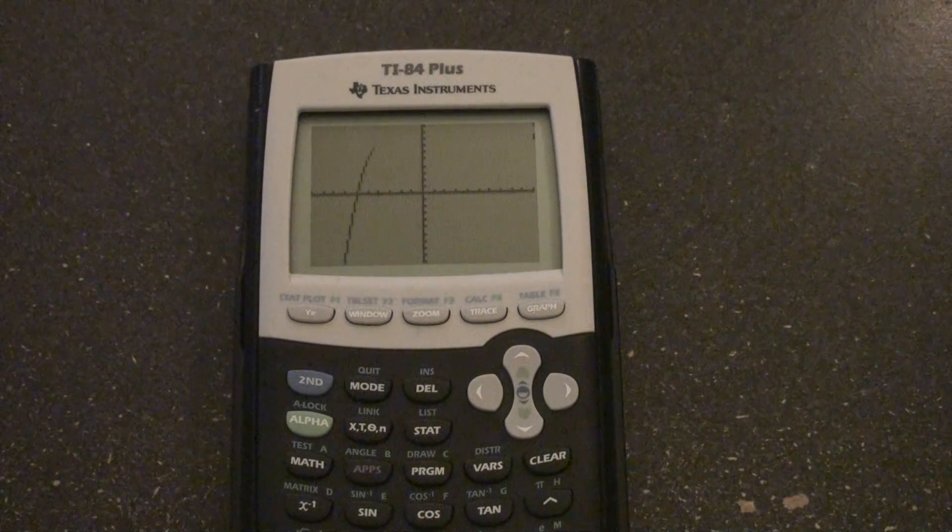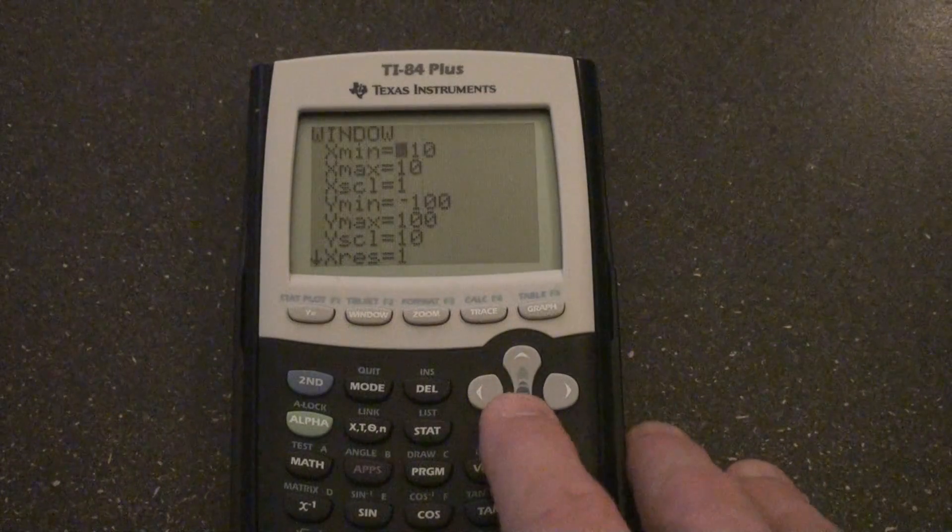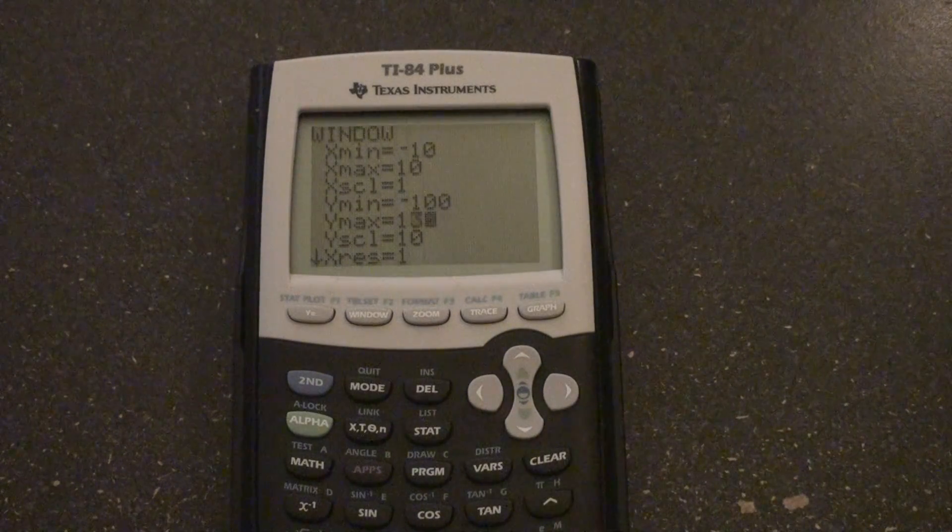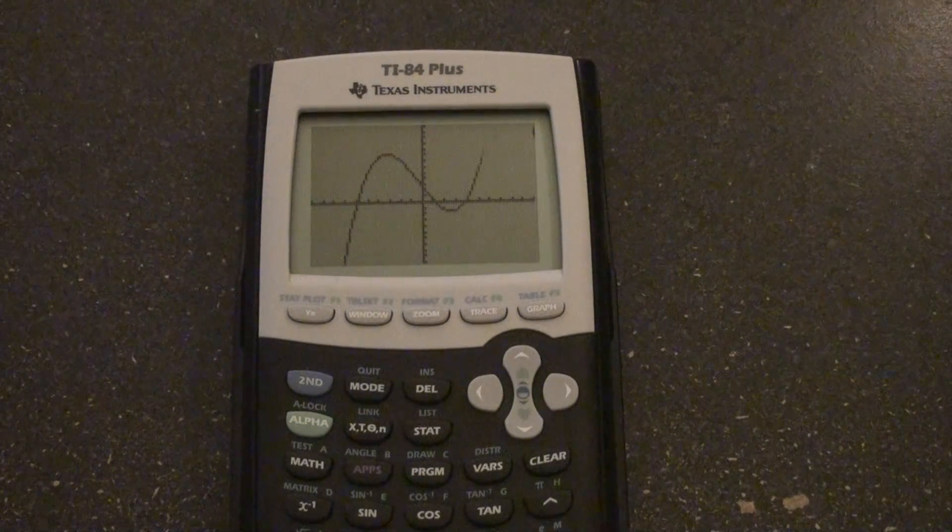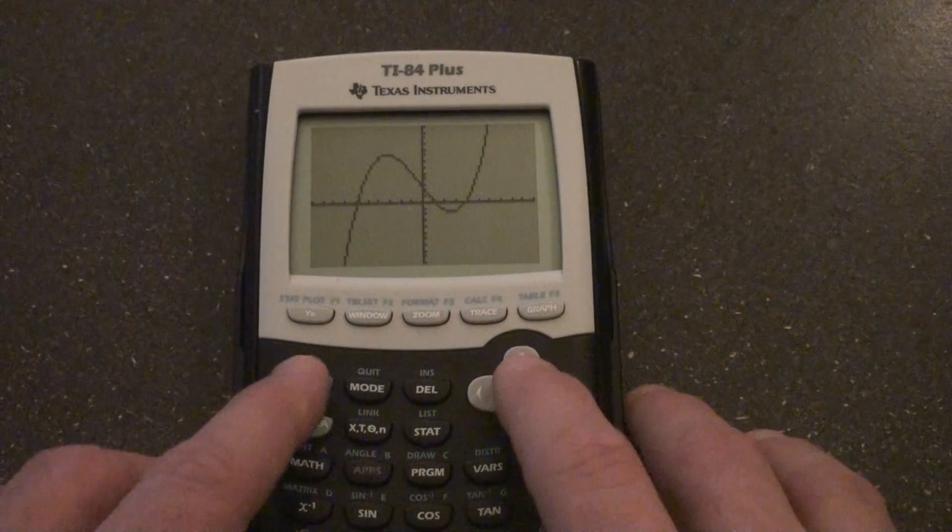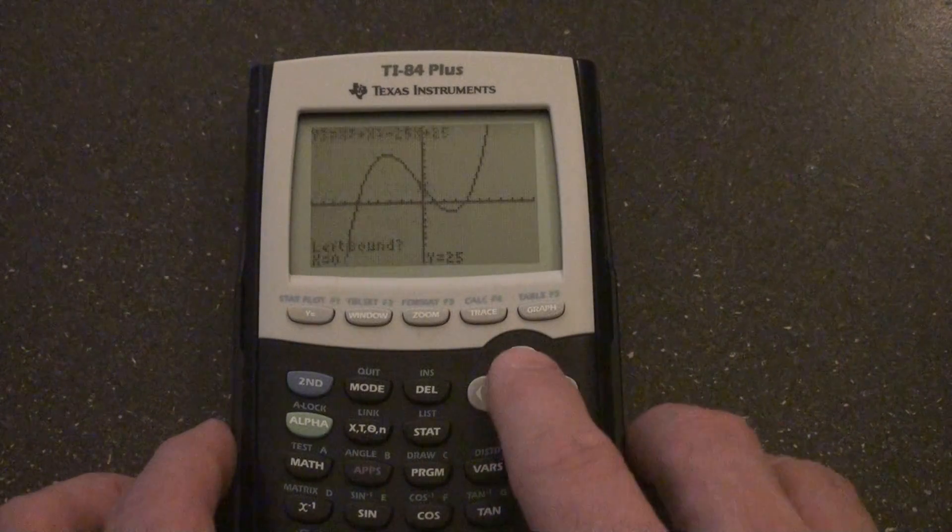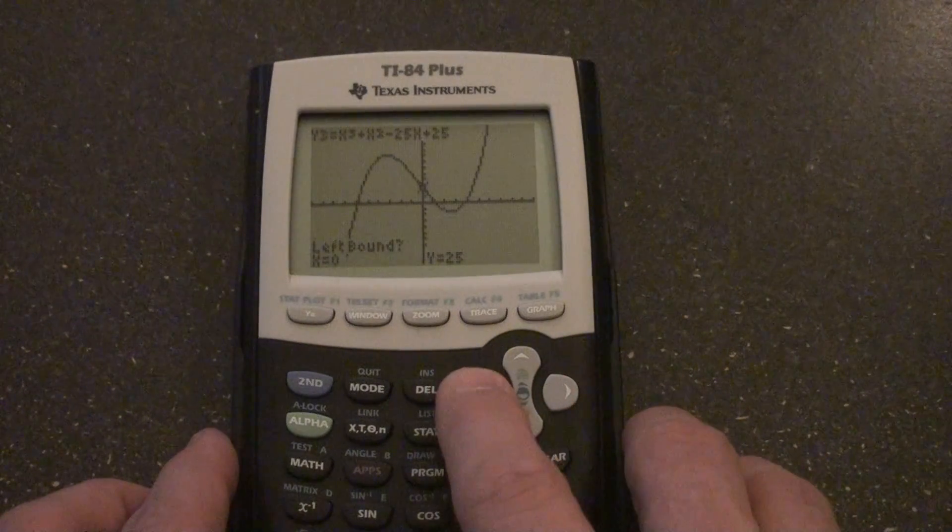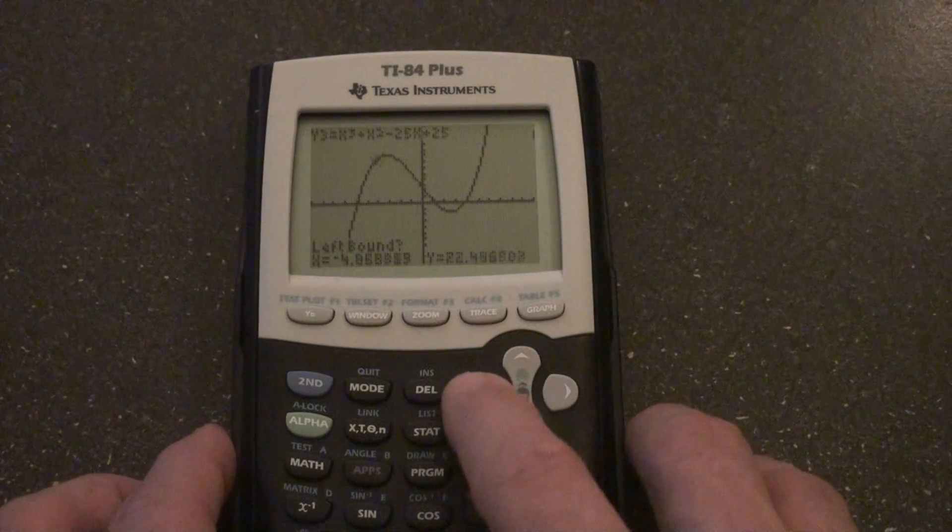Now we can actually see the max and the min. In fact, we'll go a little bit taller. We'll go up to 130 just to make sure we can see it. Okay, what we're going to do is we're going to press second, calculate. We're going to go to maximum, and it's saying left bound.